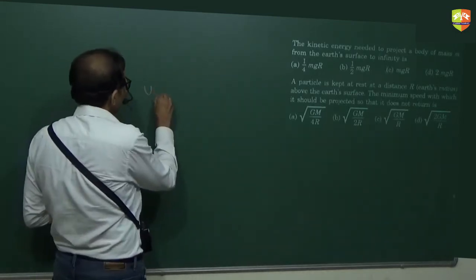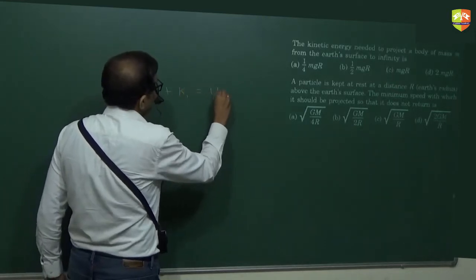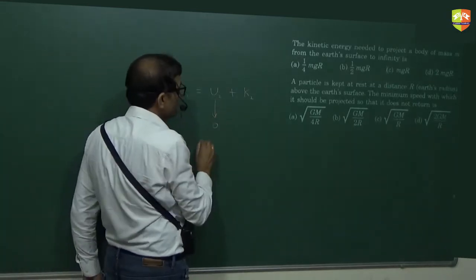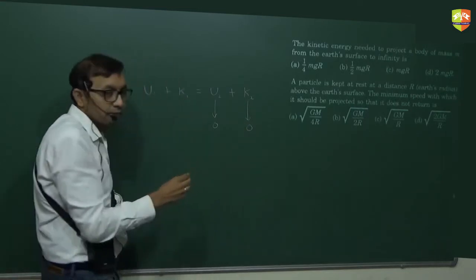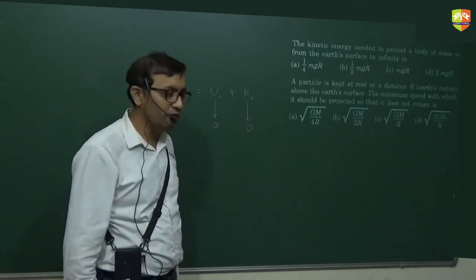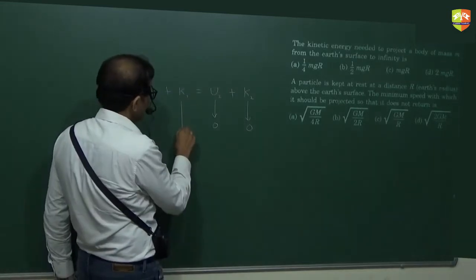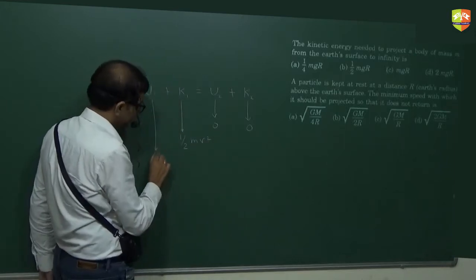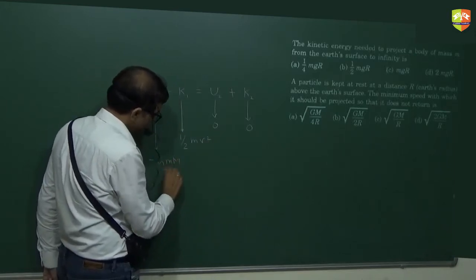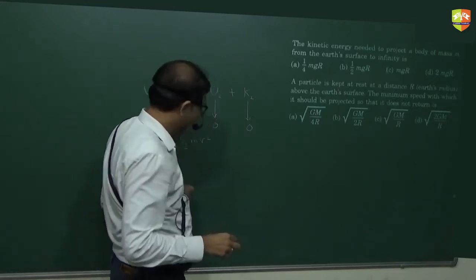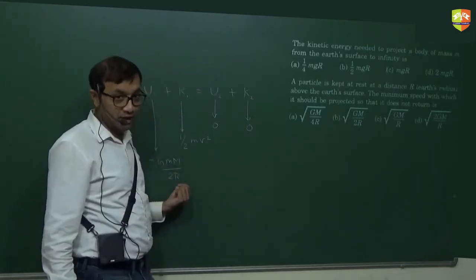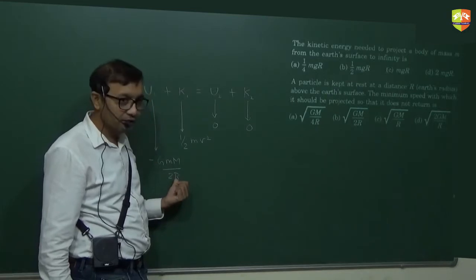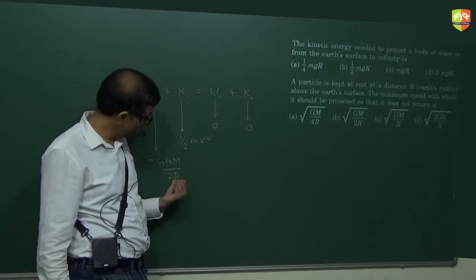But here, see in this chapter, you keep on using this formula again and again. K1 + U1 = K2 + U2, where U2 is 0. Stop talking. K2 is 0. Why K2 is 0? Because you are trying to find the minimum initial velocity. This is minus GMm by 2R. Earlier it was just R when it was thrown from the surface of the Earth, because distance from the center was R. Now, distance from the center is 2R. So that is why U1 is this.